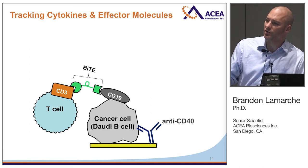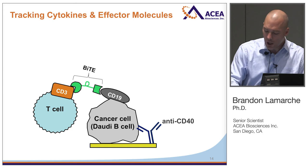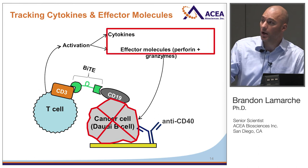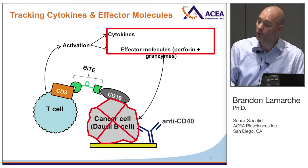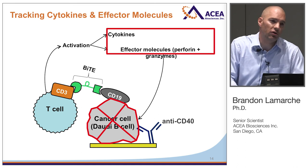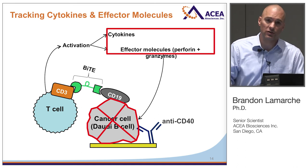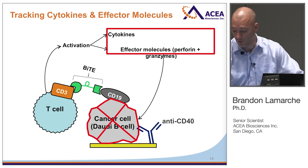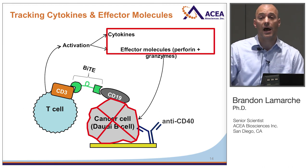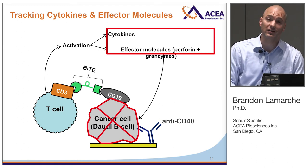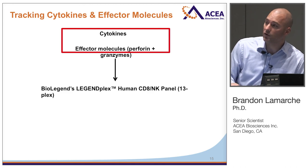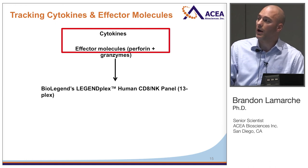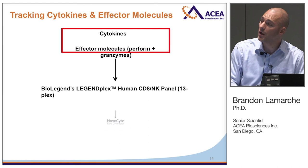Excelligence lets you assess what's happening with the target cell, but you may also want to look at cytokines or effector molecules produced in the same assay. What I want to show is a way to combine the Excelligence assay — literally take the Excelligence plate, remove the media from the well you've just analyzed — and use that to do a flow cytometry assay. In this example we've used BioLegend's LEGENDplex multiplex kit to look at different cytokines and effector molecules produced during this process.